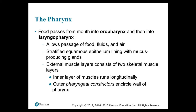The pharynx: food passes from the mouth into the oropharynx and then into the laryngopharynx. The pharynx serves as a common passageway for solid food, liquids, and air. As we described in lab, it has a stratified squamous epithelium lining with mucus-producing glands, and an external muscle layer consisting of two skeletal muscle layers. The inner layer runs longitudinally and the outer pharyngeal constrictors encircle the wall of the pharynx.